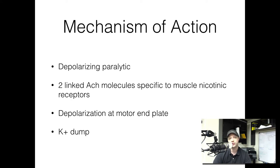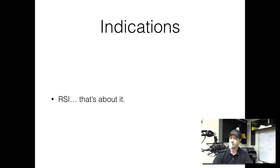So what would you use a drug with this very specific purpose for? You're pretty much going to use it for RSI, and that's about it. Especially pre-hospital, there's not a whole lot of other reasons to use this drug. Pre-hospitally, we're going to use it exclusively for rapid sequence induction — a patient whose airway we can't manage, we can't control them, so we have to paralyze them to maintain their airway.